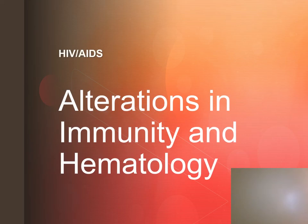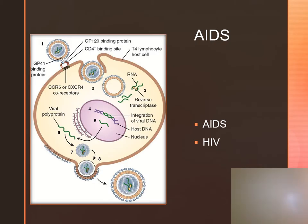Alterations in Immunity and Hematology: HIV and AIDS. AIDS is an infectious and potentially fatal disorder that weakens the immune system. HIV is the pathogen that causes AIDS, and people who are HIV positive can infect others even if they are asymptomatic. HIV and AIDS is considered a pandemic.